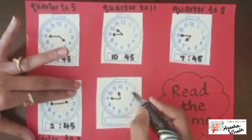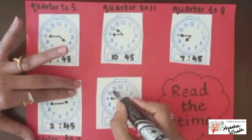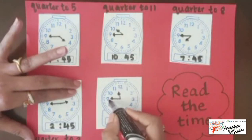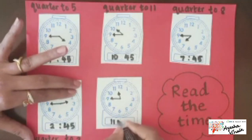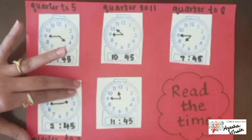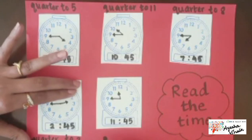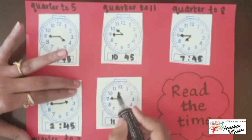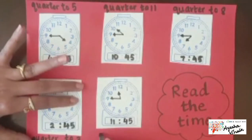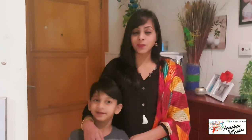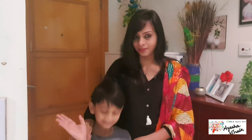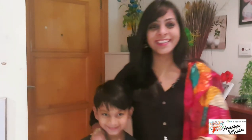Last one: short hand between 11 and 12, long hand on 9 — the time is 11:45, and the analog time is quarter to 12, because in another 15 minutes it's going to be 12 o'clock. That's it for today — see you in the next video. God bless you, much love, and remember to spread kindness!